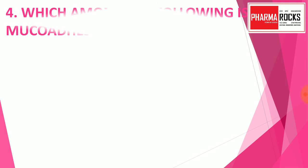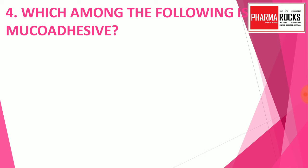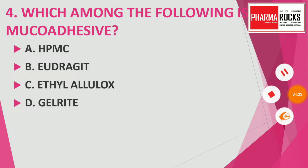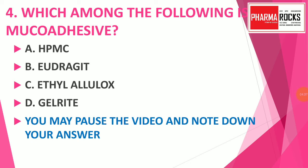Question number 4: Which among the following is a mucoadhesive polymer? Option A: HPMC, option B: Eudragit, option C: ethyl cellulose, option D: Zeldrith. You may pause the video and note down your answer. The correct answer is option A: HPMC. From the four given options, HPMC is used as a mucoadhesive polymer and is used in various tablet formulations.